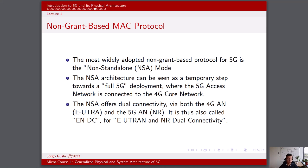The most widely adopted non-grant-based protocol for 5G is the non-standalone, or NSA, mode. The NSA architecture can be seen as a temporary step towards full 5G deployment, where the 5G access network is connected to the 4G core network. The NSA offers dual connectivity via both the 4G AN and the 5G AN, and is thus also called ENDC, E-UTRAN, and NR dual connectivity.